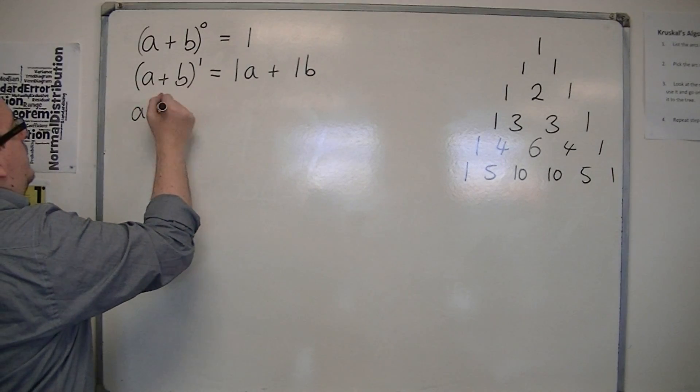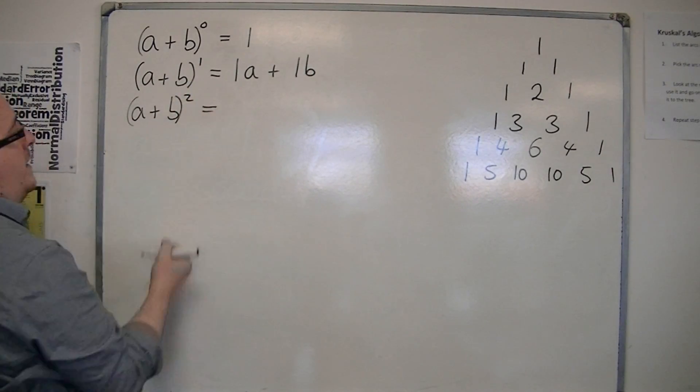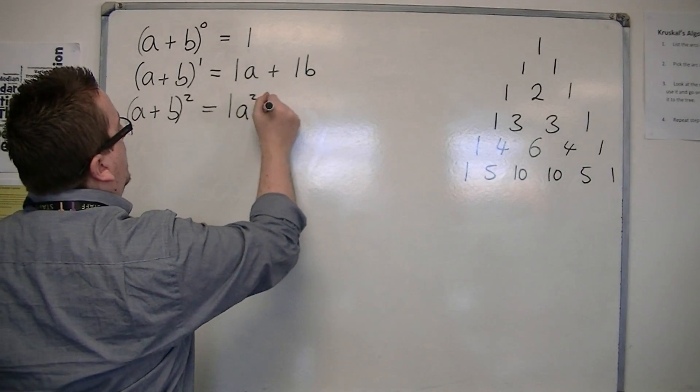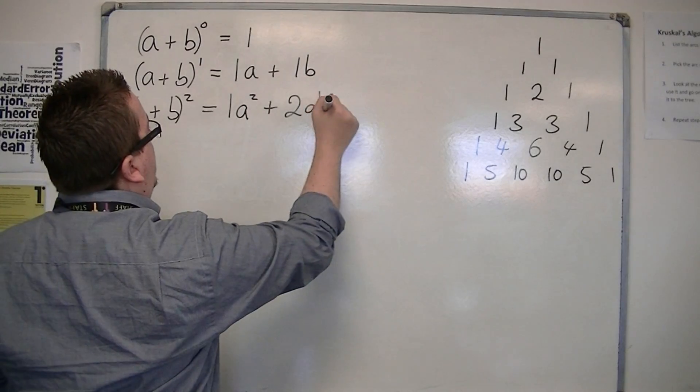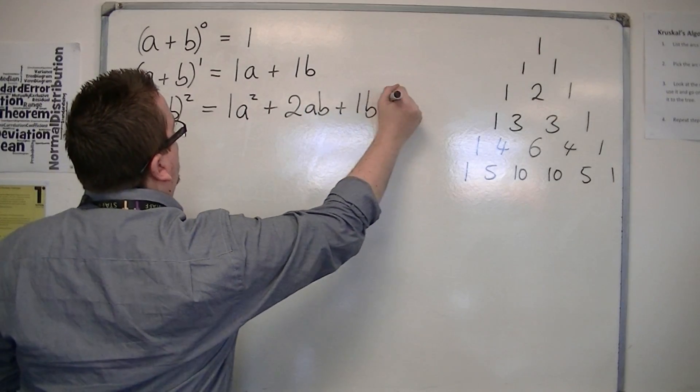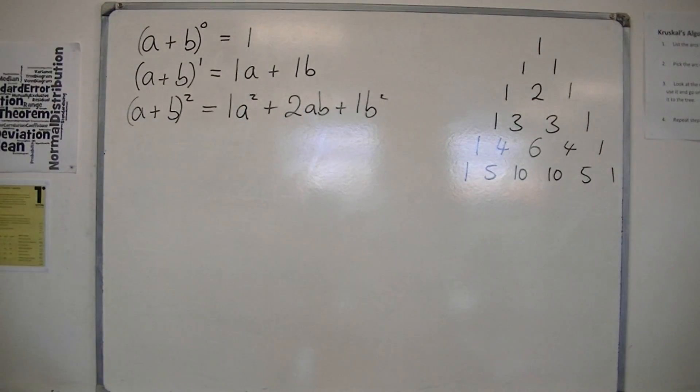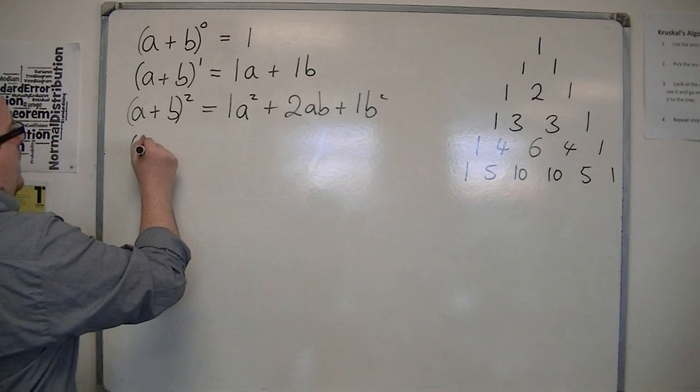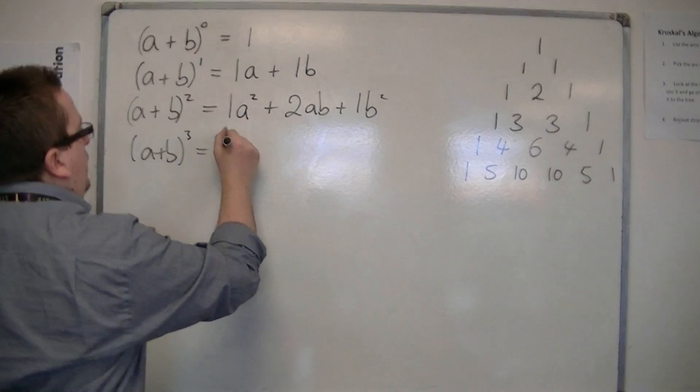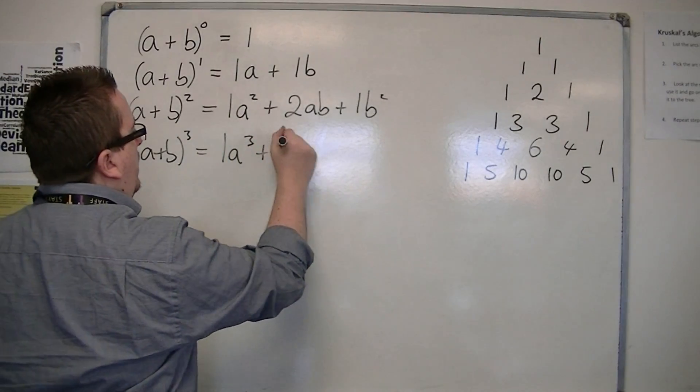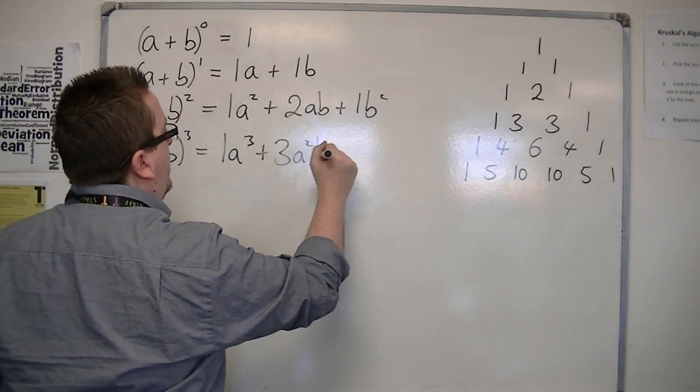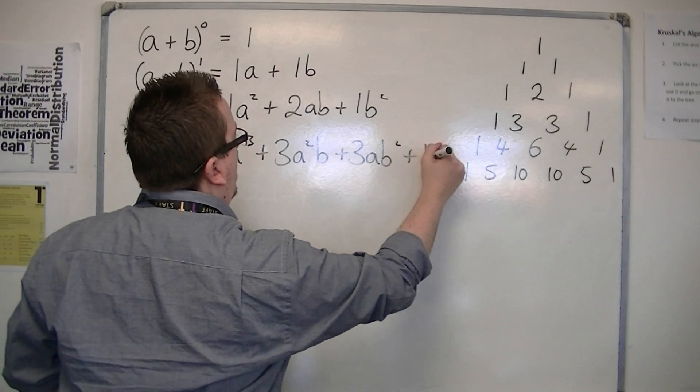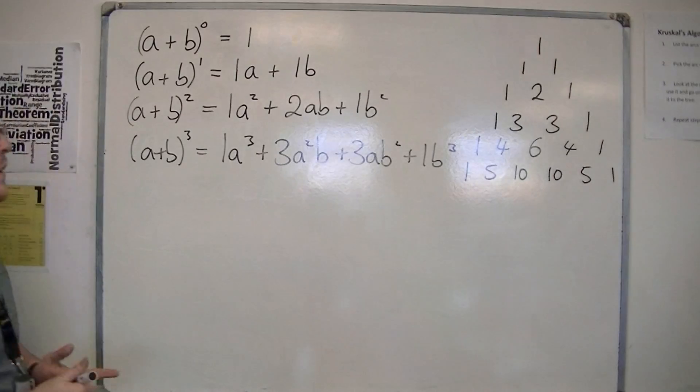(a+b)^2, multiplying out with double brackets, is 1a² + 2ab + 1b². And maybe you can see where this is going. (a+b)³ is 1a³ + 3a²b + 3ab² + 1b³.